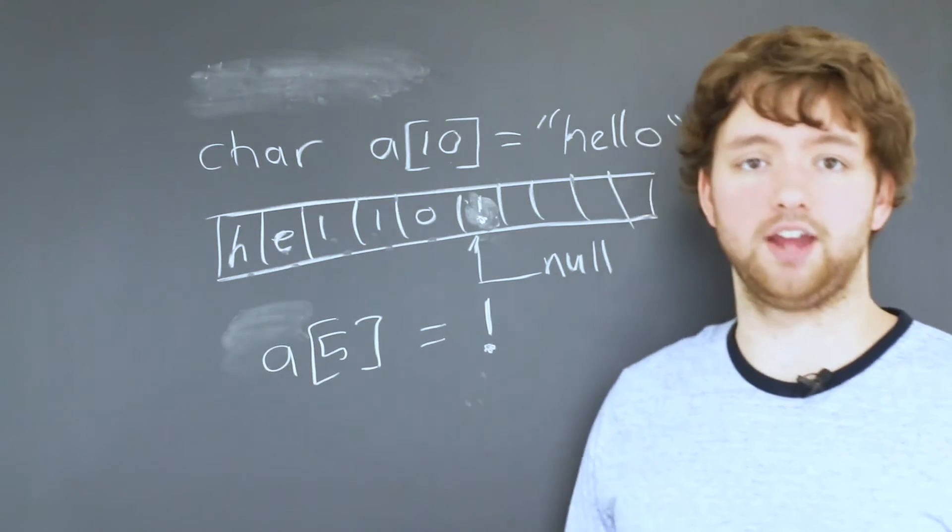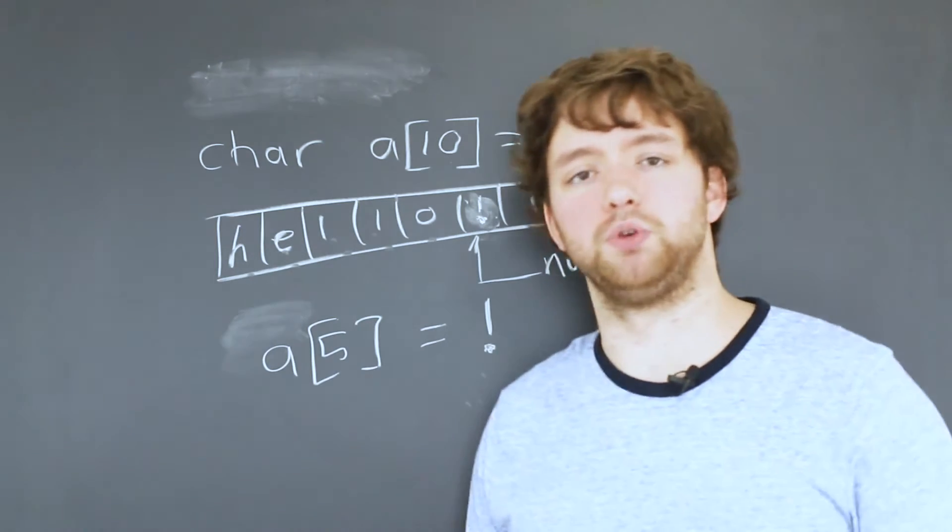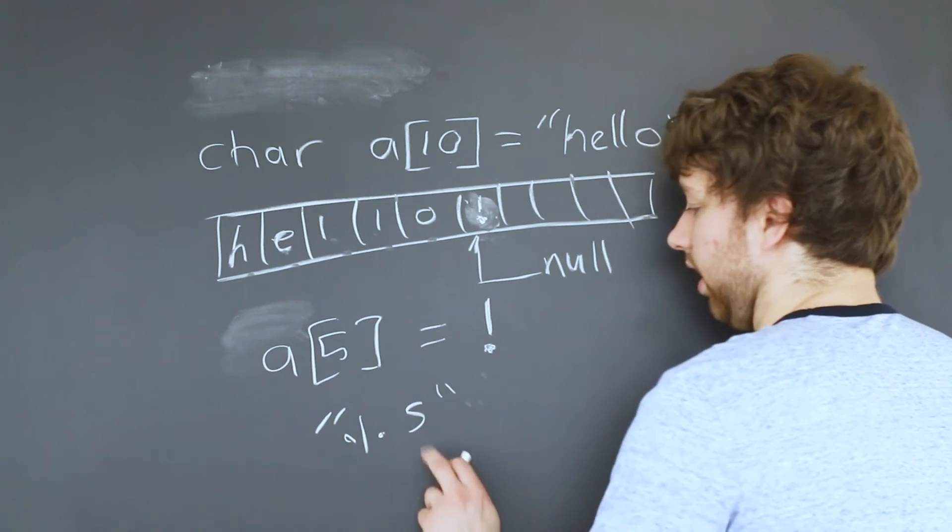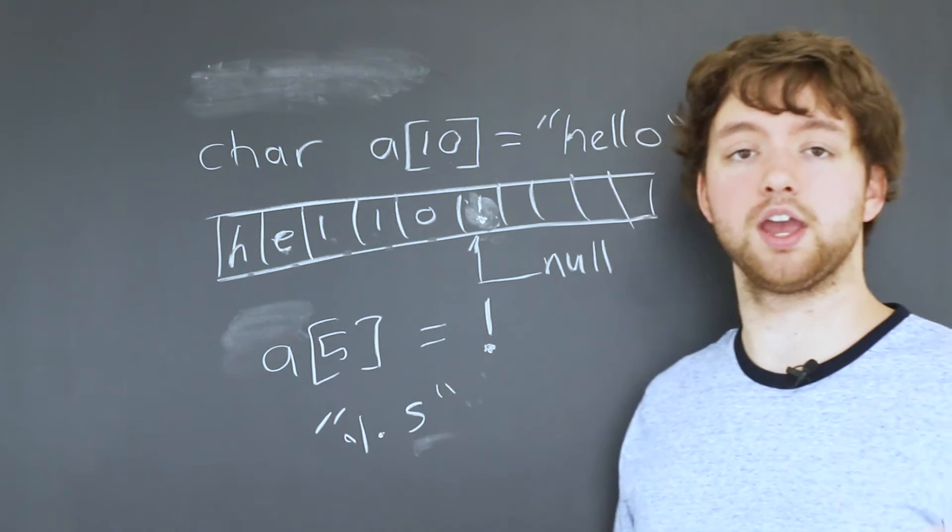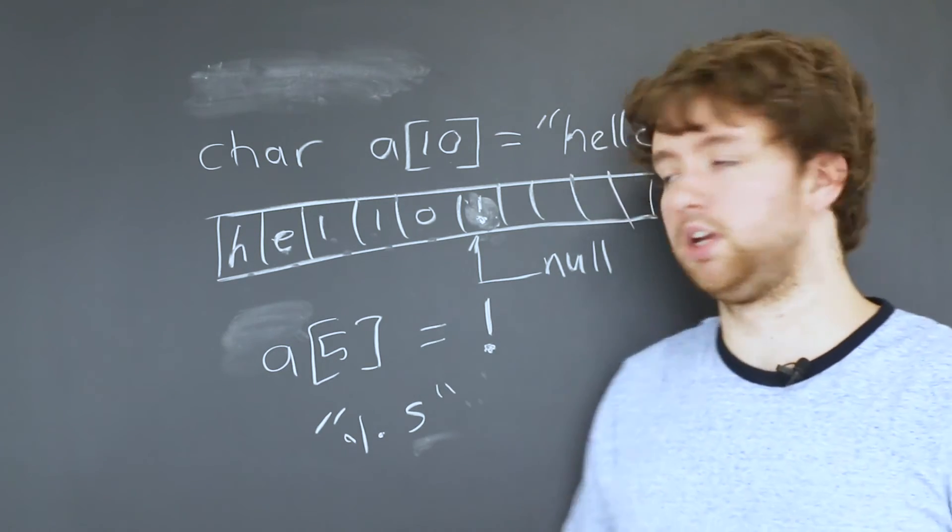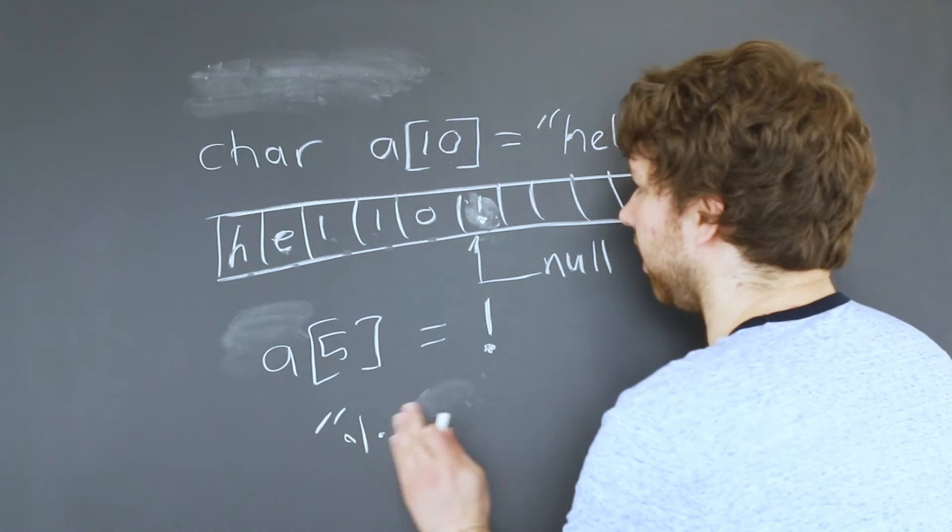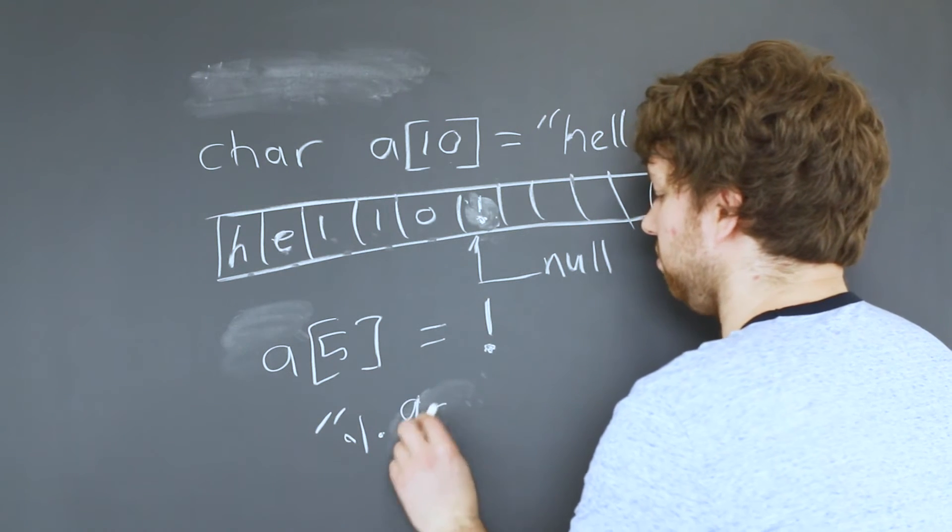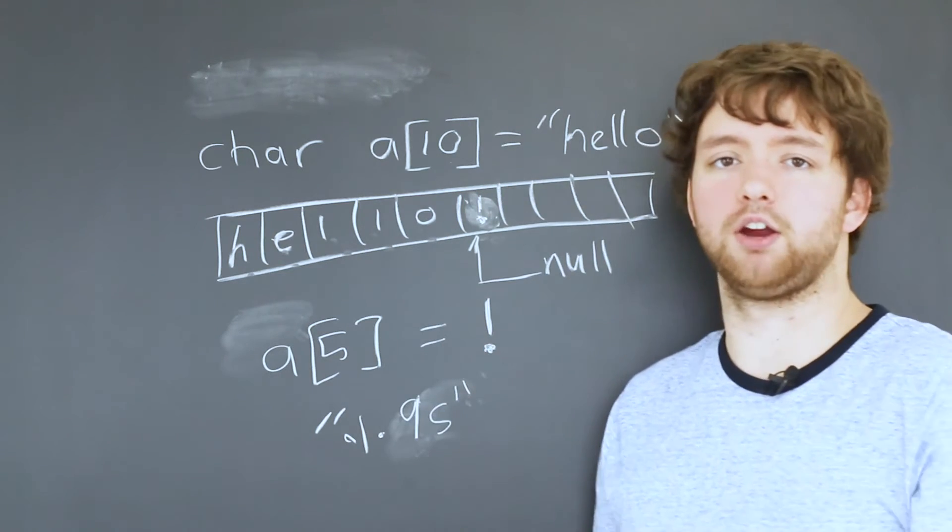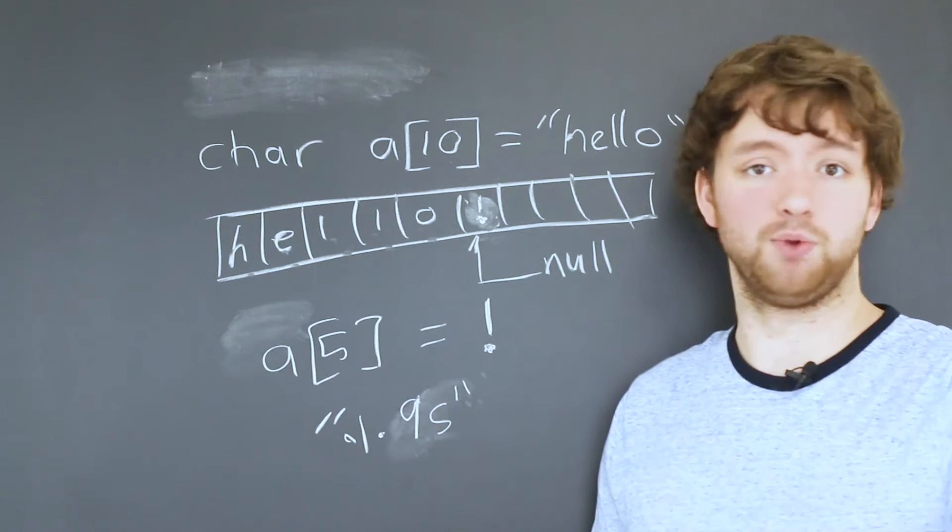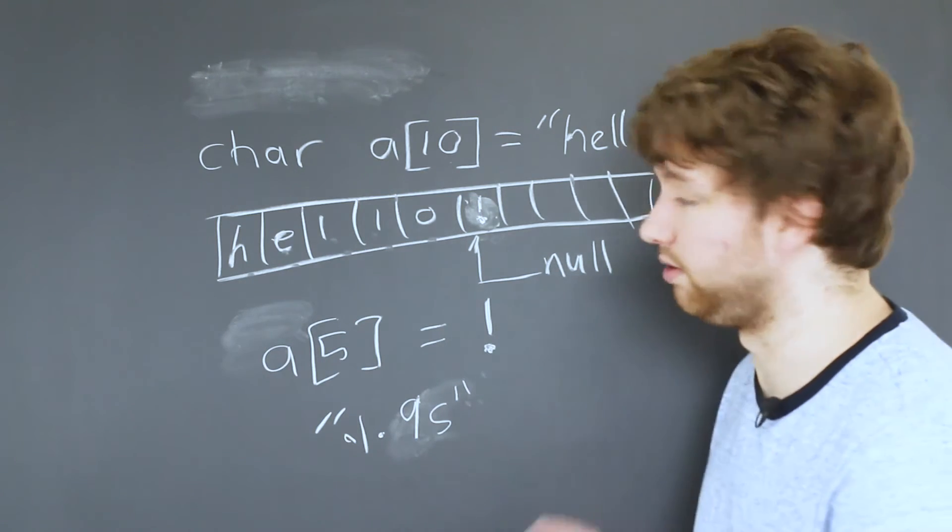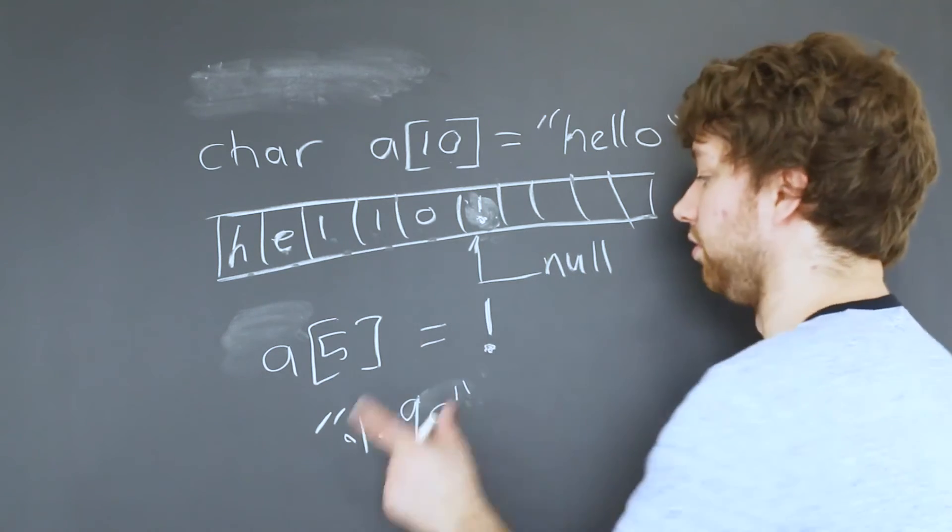So for example, with the scanf function, you usually would pass in like a string such as percent s and this conversion character s would basically say, hey, we're expecting a string. Well, that person can type a string as long as they want. So I think you can actually put a number here like a nine to limit and it'll basically crop after nine characters. They're not going to be able to give you any more. They can still type it, but when they hit enter, only the first nine characters are going to be used for whatever you're using this for.